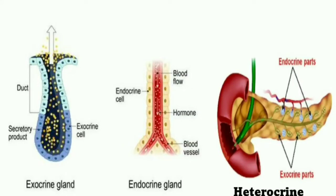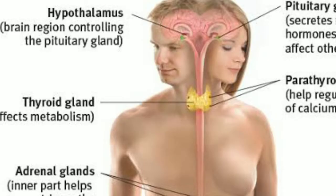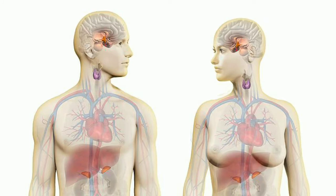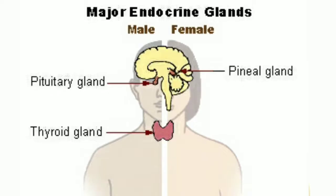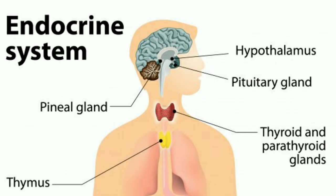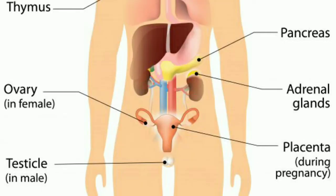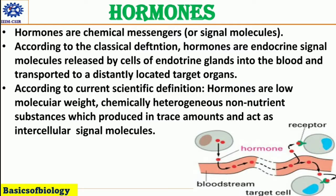Endocrine glands can be contrasted with exocrine glands, which have ducts and secrete products into these ducts for transport to the body cavities. However, several organs and tissues such as the hypothalamus and thymus are not classified as endocrine glands but contain cells that secrete hormones. Hence, the endocrine system includes not only all endocrine glands but also hormone-secreting cells.